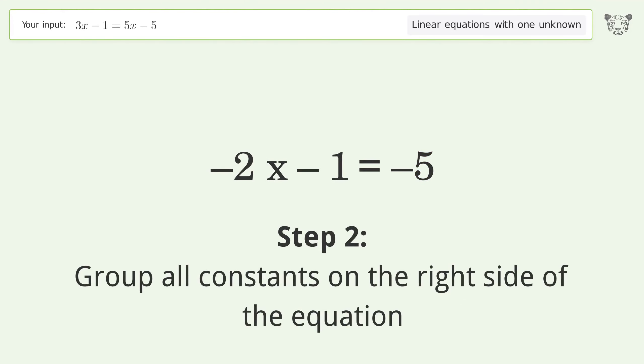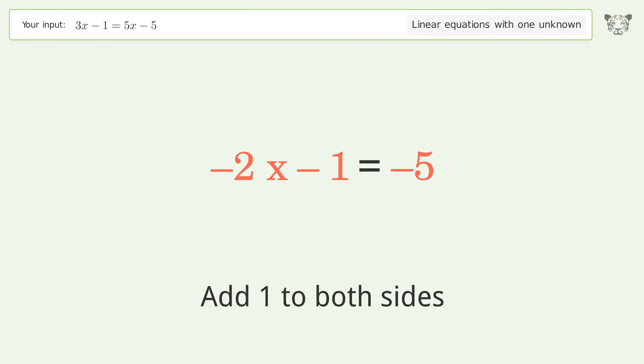Group all constants on the right side of the equation. Add 1 to both sides. Simplify the arithmetic.